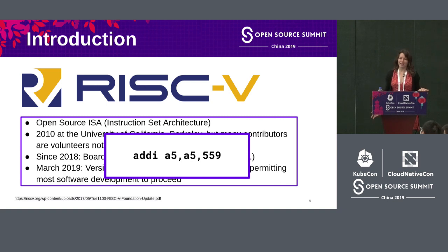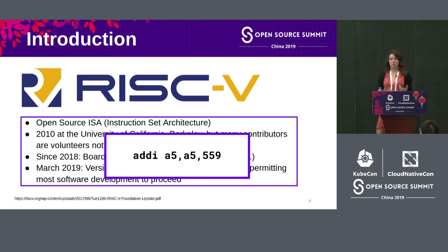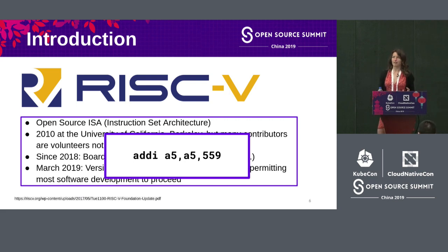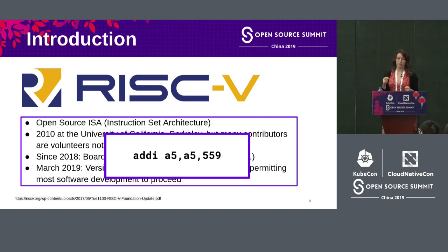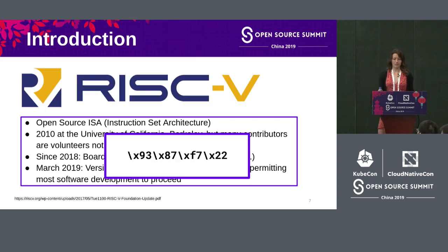What is an ISA actually? It's whatever your CPU hardware understands — it defines memory and registers, and the logic that does calculations between registers. It's essentially the machine language describing what your CPU is capable of carrying out. What the CPU actually understands is binary data, but to make things easier for programmers there's assembly mnemonic language. For example, one instruction means: add the immediate 559 to whatever is in register A5 and store it back in A5 — but the CPU just sees binary data that means the same thing.